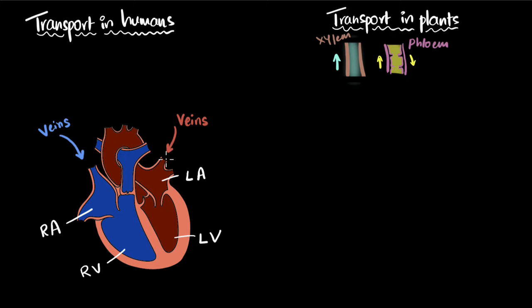Then from the veins, the blood always enters into the atrium. The blood always enters into the atrium. From the atrium, the blood always goes into the ventricles. From the ventricle, the ventricle pushes the blood. It always exits the heart from the ventricle through the arteries.